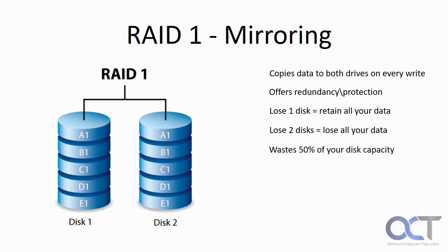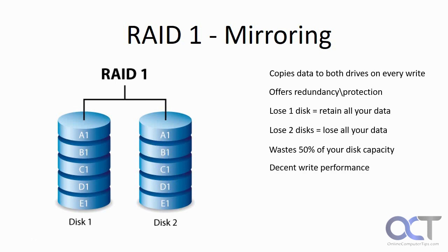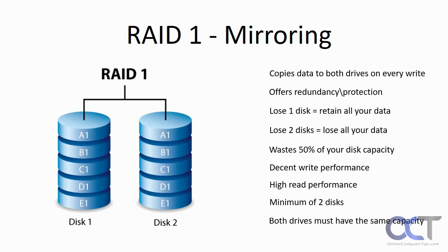One downside to RAID 1 is you lose 50% of your capacity. So if this is a one terabyte disk and this is a one terabyte disk, you would think you're going to have two terabytes of disk space — but no, you're going to just have one because they're duplicates of each other. It does have pretty good write performance, and really good read performance because it's reading off two disks at the same time. You need a minimum of two disks, and both drives need to have the same capacity.